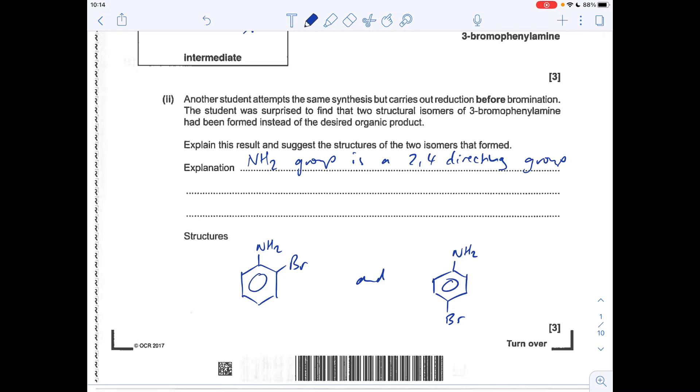And the final part of the question, obviously, if the reduction stage was carried out before the bromination, you're going to have an NH2 group directing the bromine. And NH2 groups are two four-directors. So they would make the two-bromo product and the four-bromo product.